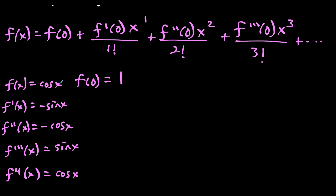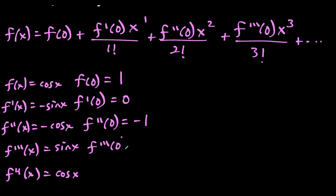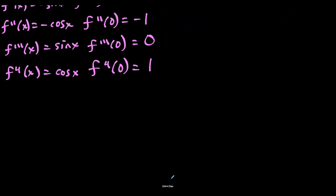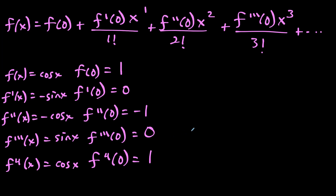Because it's a McLaurin series, we plug in zero to f of x and all of its derivatives. So f of zero equals one because cosine of zero is one. Then f prime of zero is negative sine zero, which equals zero. The second derivative at zero is negative cosine zero, which is negative one. The third derivative at zero equals zero because sine of zero is zero. And the fourth derivative at zero brings us back to positive one. The pattern is: one, zero, negative one, zero, one, zero, negative one, zero. That's the pattern we'll use in our McLaurin series formula.